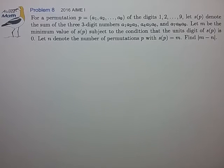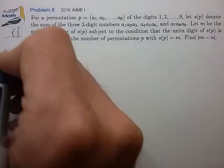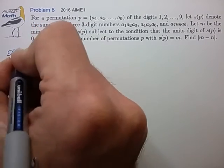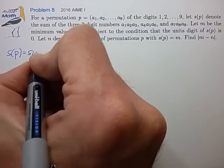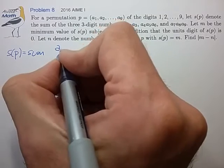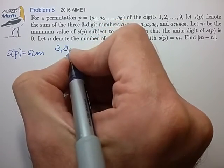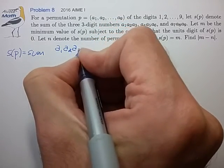Okay, so let me try to draw this out in a way that makes a little more sense. We have s(p) equal to this sum, which looks like three 3-digit numbers.